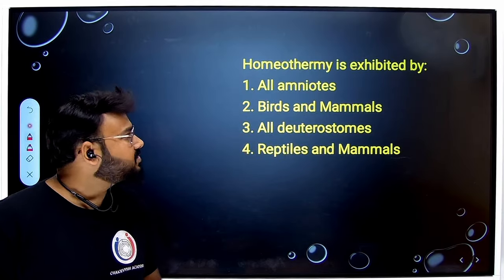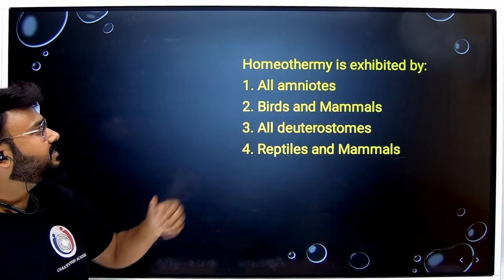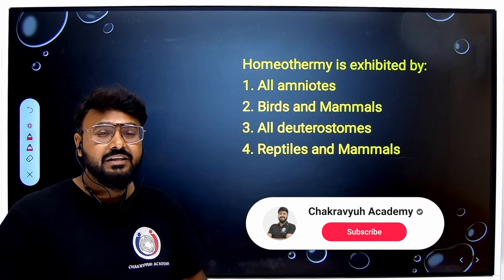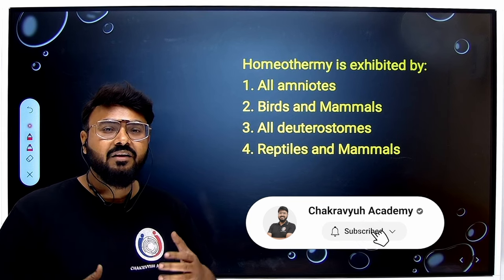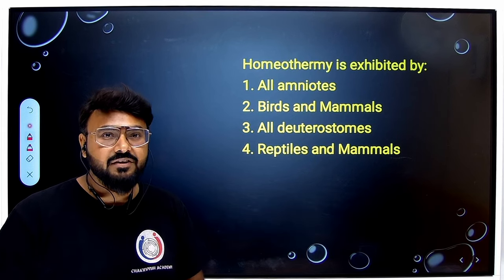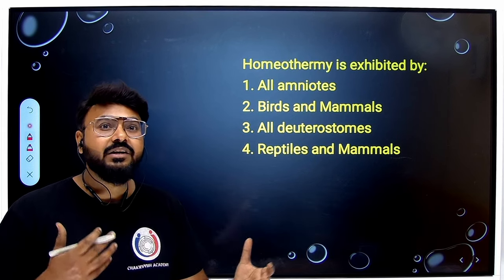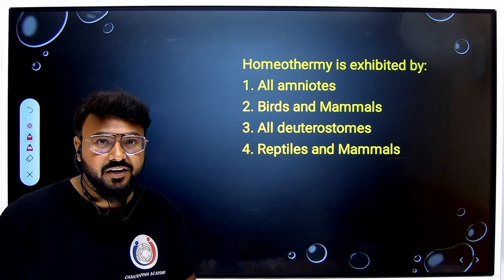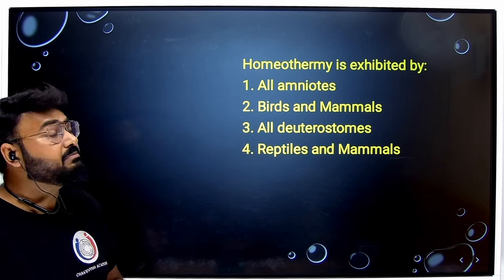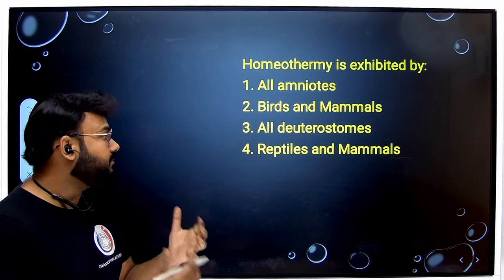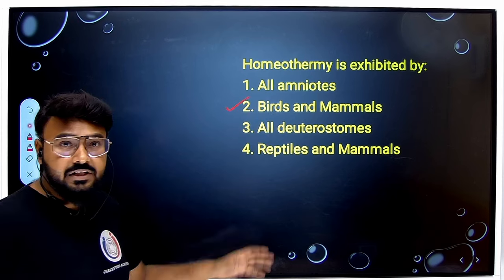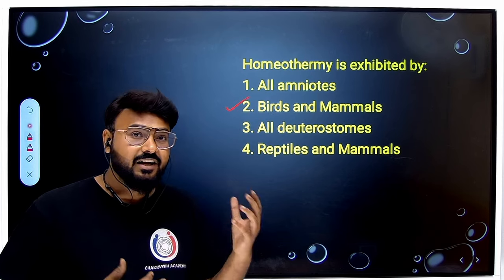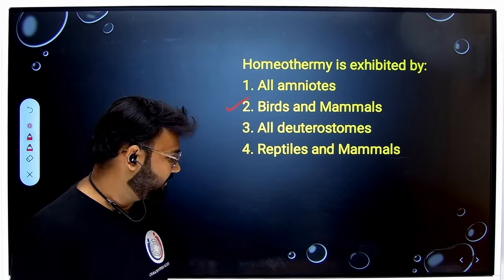In the first question it says homeothermy is exhibited by — first of all, homeothermy means they are able to regulate the body temperature as per the external surrounding. Homeothermy refers to warm-blooded animals, and we know those are birds and mammals. So the second option is the right answer. Let me show you a slide from the NCERT.